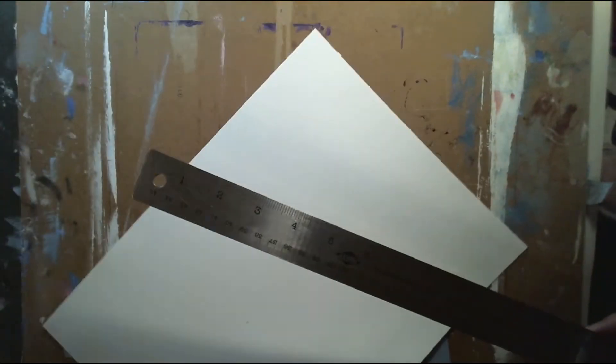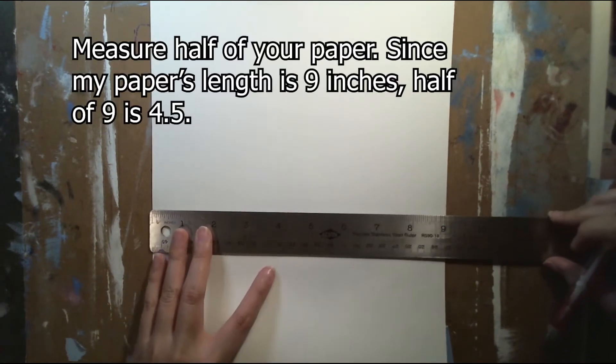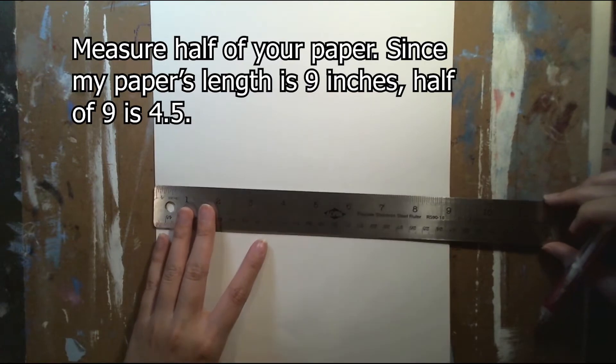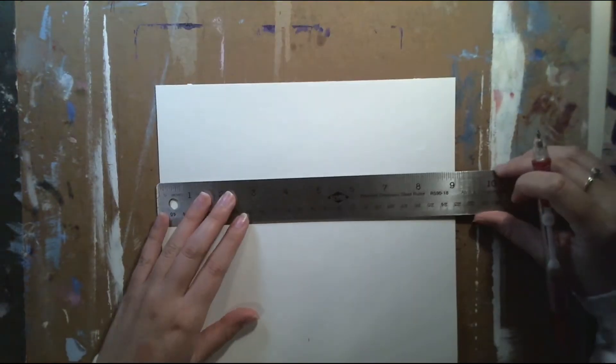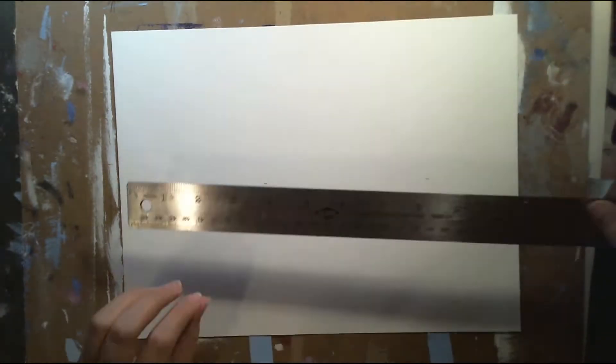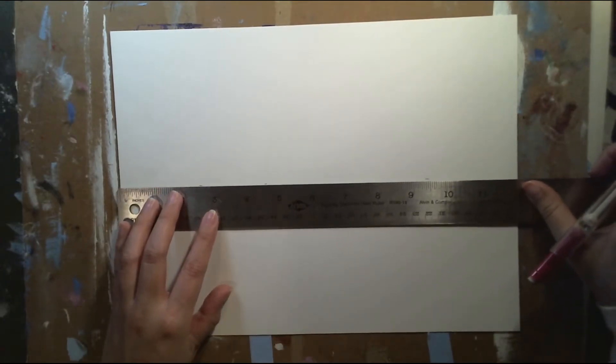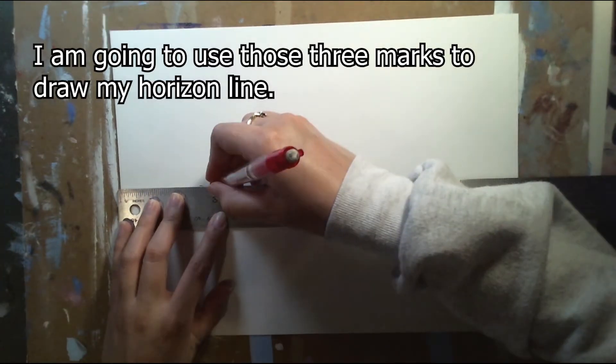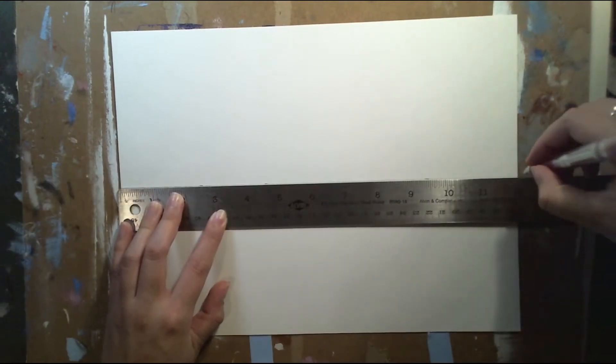So the first step that I'm gonna do is measure halfway down and since the length of my paper is 9 inches, the center is gonna be 4.5. So I'm gonna make three marks and then I'm gonna turn my paper horizontally and using those three marks, I'm going to draw my horizon line and your horizon line is at the center of your paper.